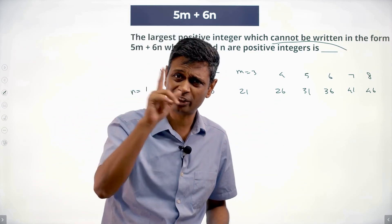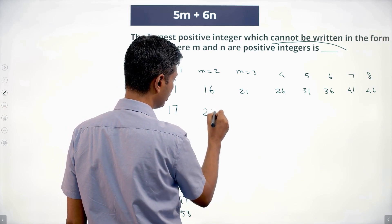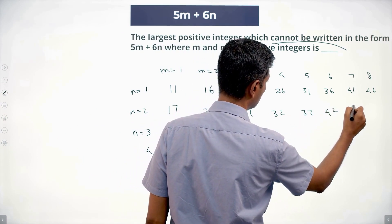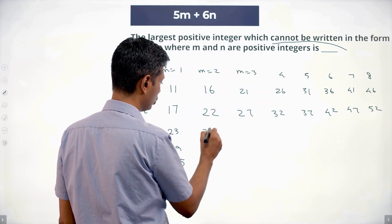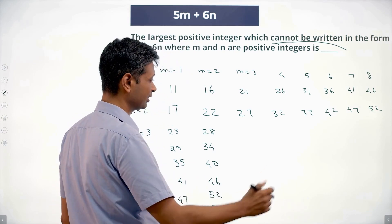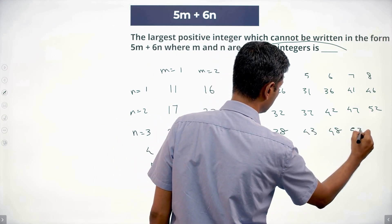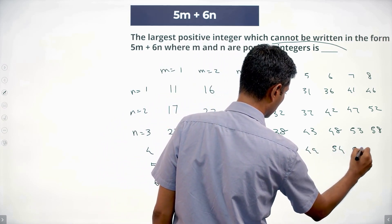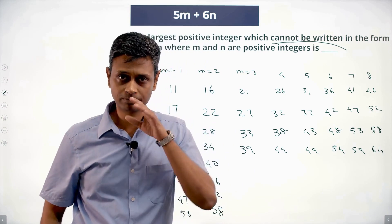I can do even better — m=2, n=2 gives 22, then 27, 32, 37, 42, 47, 52. Another sequence: 16, 22, 28, 34, 40, 46, 52, 58. And more: 28, 33, 38, 43, 48, 53, 58; then 39, 44, 49, 54, 59, 64. I can fill the entire grid of possible numbers, though some numbers are still not possible.